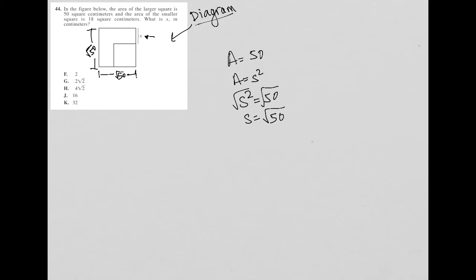The area of the smaller square is 18 square centimeters, which means I know that this distance is square root 18 and square root 18. So, again, for the same exact reasons, S squared equals 18. And then we find our way down here to S equaling square root 18.